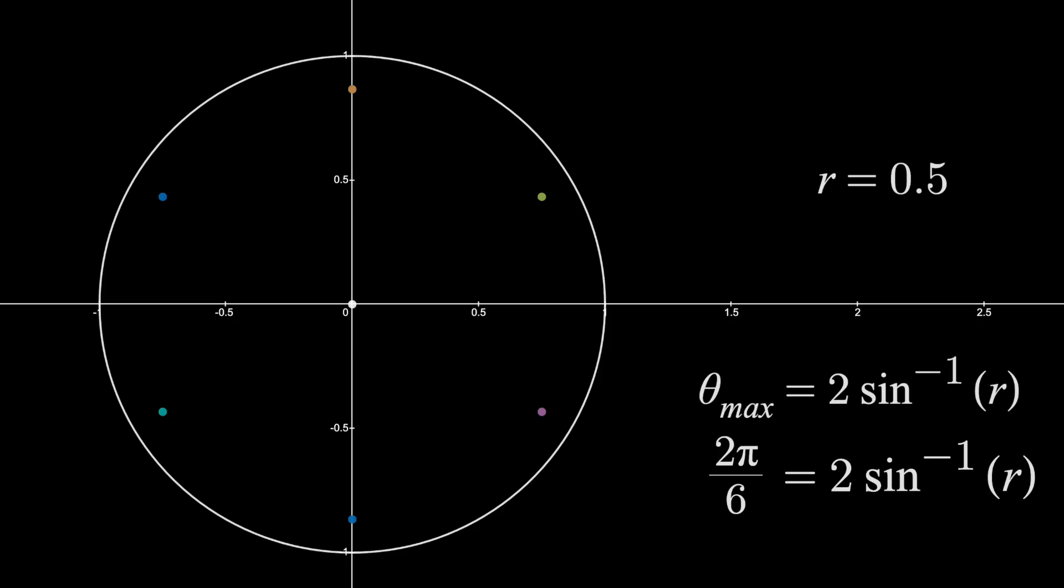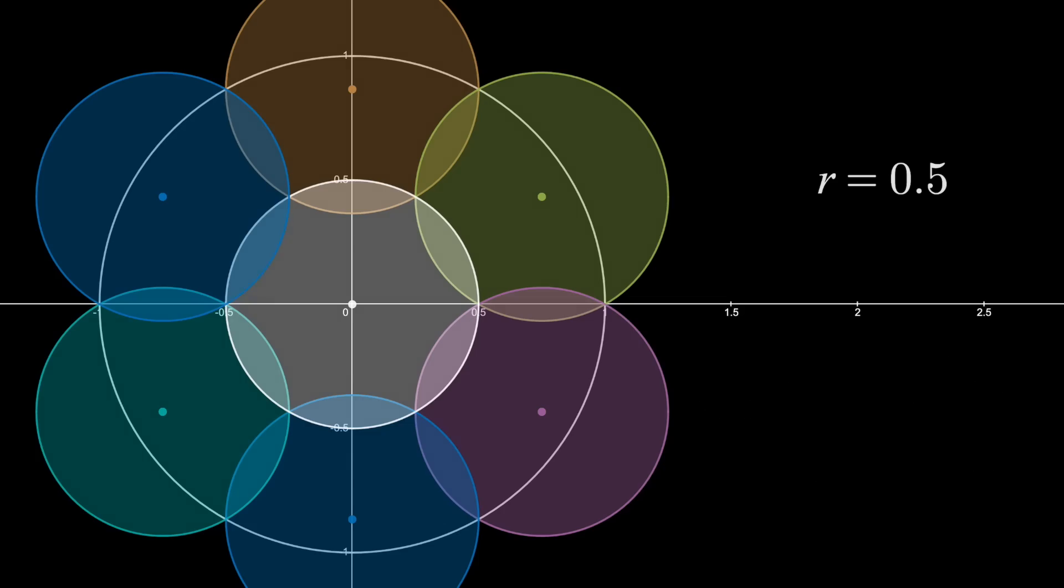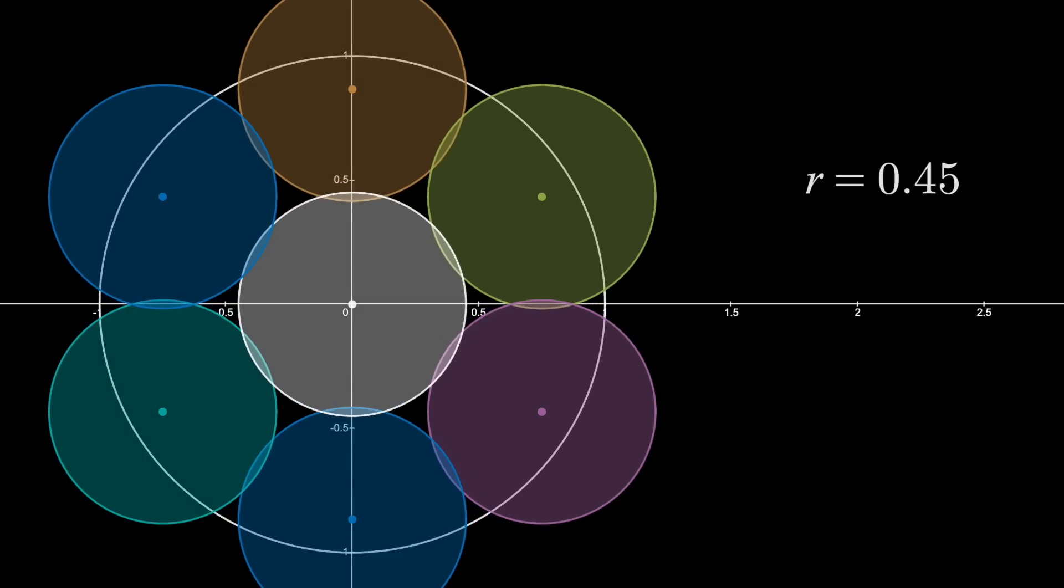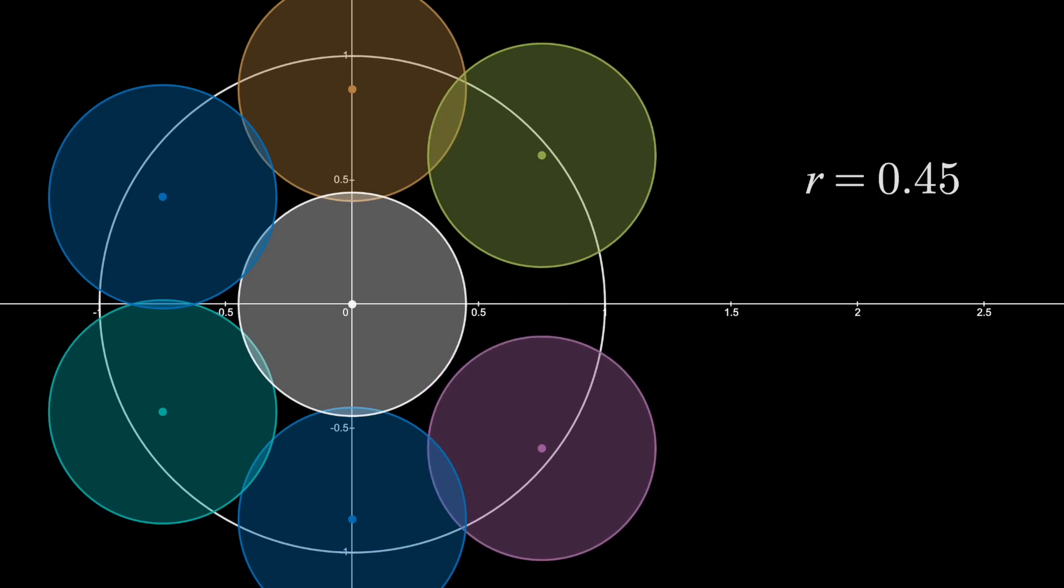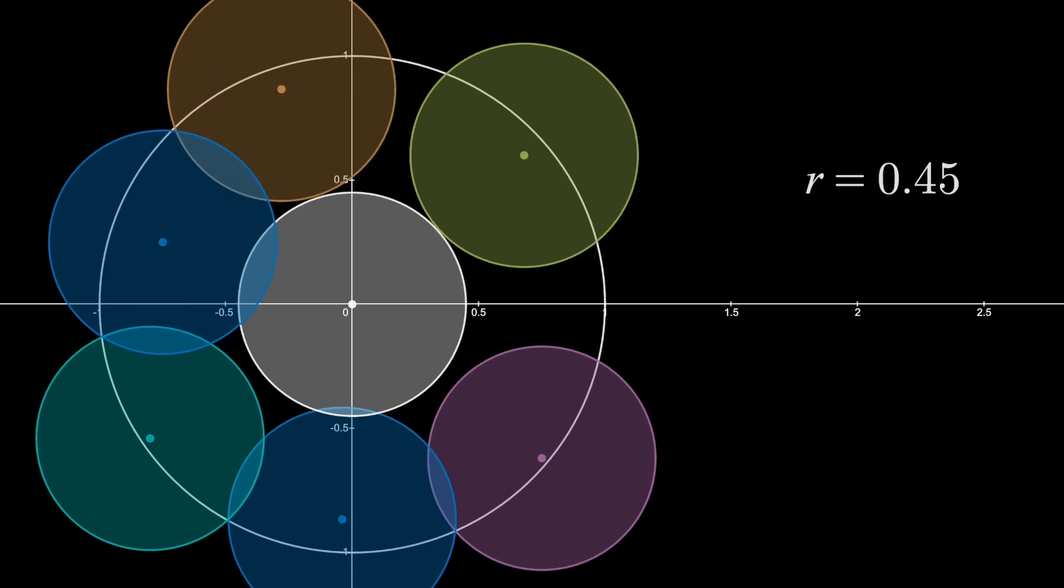Now some of you might be asking, wait, how do we know this is optimal? Which is the same as asking, how do we know we can't find a radius less than 0.5 kilometers, where there's a 7 disk covering? And that's because if r is anything less than 0.5, the maximum arc that can be covered by 6 disks is less than 360 degrees. No matter how I move these 6 outer circles, they now cannot cover the full perimeter.